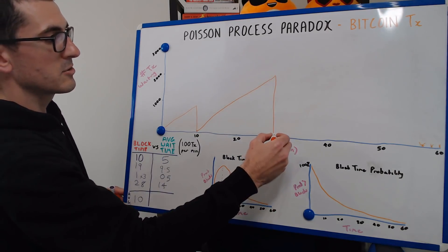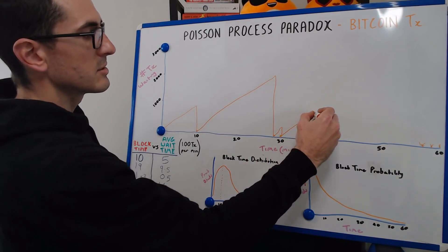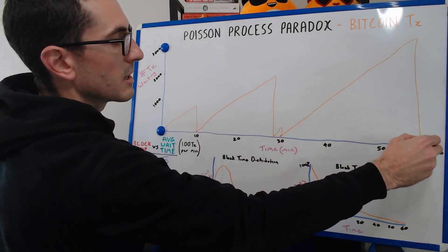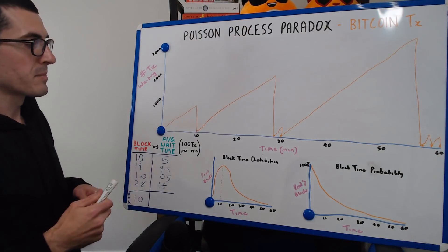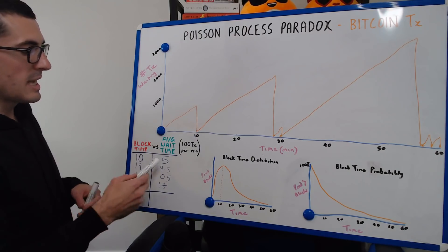We then had 100 transactions in a one-minute block and then 2,800 transactions in that 28-minute block followed by those two one-minute little transactions there.